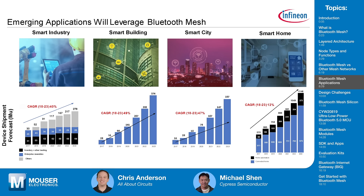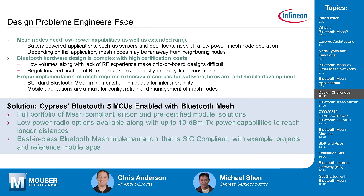Challenges designers face when implementing Bluetooth mesh include battery-powered devices like sensors — you need very low power consumption or you'll be changing batteries every week. Hardware design is a challenge for anything RF-related, and on top of that there's regulatory certification, which consumes time and resources. Properly implementing a full mesh solution also requires extensive resources for firmware, software, and testing.